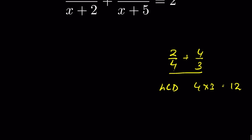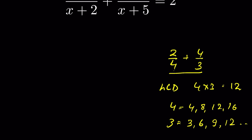Alternatively, we list the multiples of 4: 4, 8, 12, 16, and so on, and then also list the multiples of 3: 3, 6, 9, 12, and so on. We can see that 12 is the common multiple of both 4 and 3, so the LCD is 12. Simply put, we multiply the two numbers that do not share a common divisor, so 12 is the least common denominator.